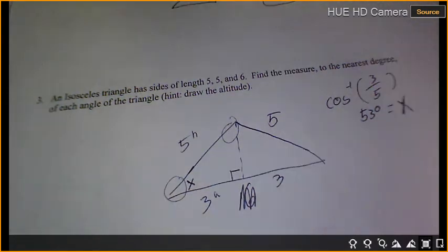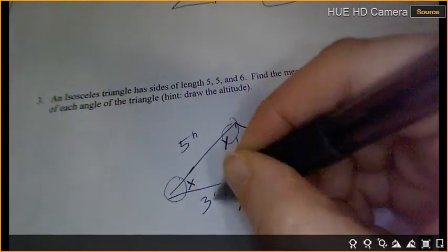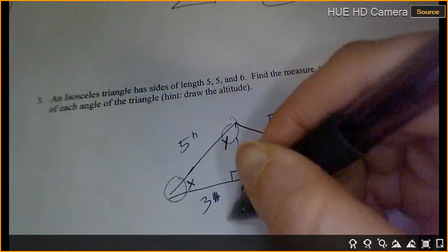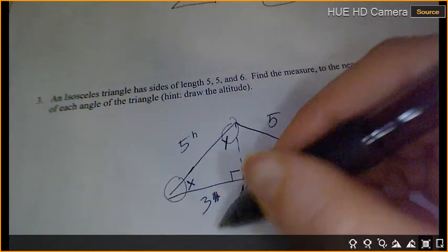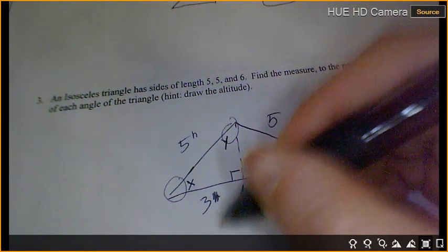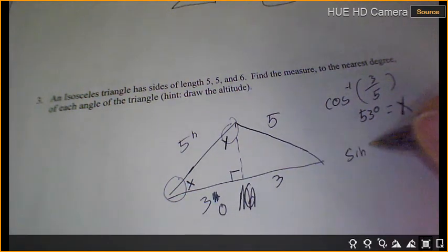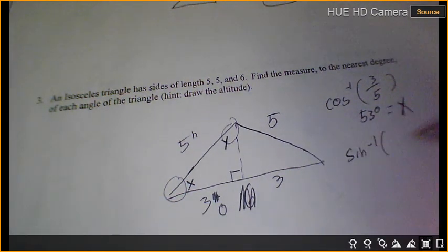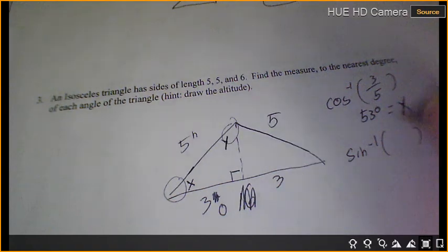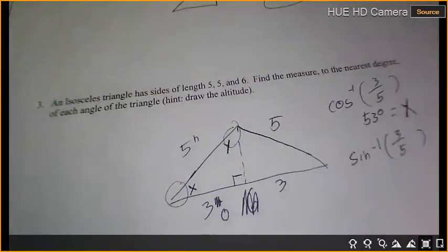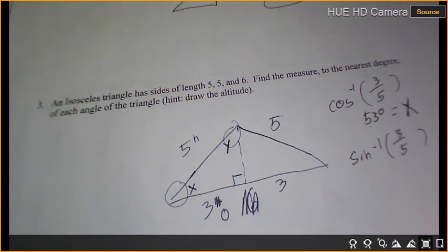We're going to call this up here y. So this is no longer adjacent. This is the what to y? 3 is what to y? Opposite. Because it's now across from it. So we're going to use sine negative 1 equals opposite 3 over hypotenuse 5. And I get 37 degrees.